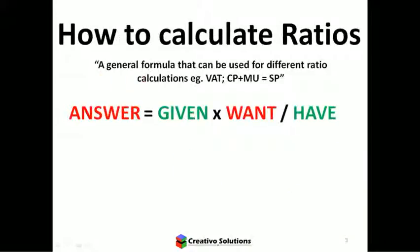How are we going to calculate ratios? You need a general formula to approach different calculations. You could use this for VAT calculations, cost price, marketing, selling — anything where you have a ratio with a relationship between different variables. The general equation is: the answer you're looking for equals the given amount times the want over the have.